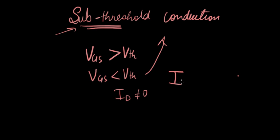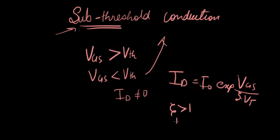And the current in that case is given by this equation: ID equals I0 exponential VGS over, I don't know what this is called, times VT. But if you look at this, it is always greater than 1, and it's called the non-ideality factor.